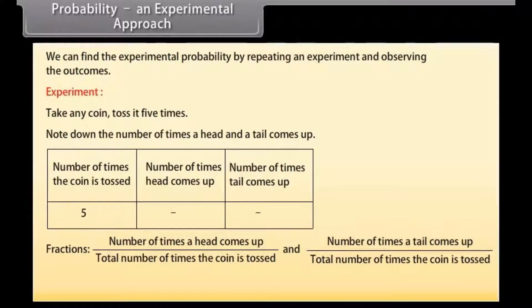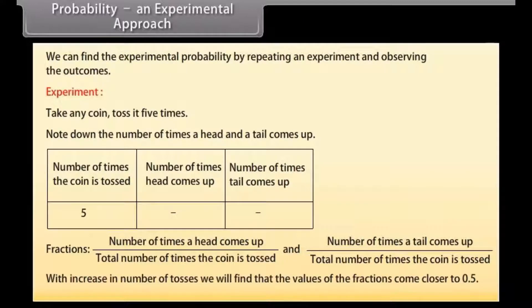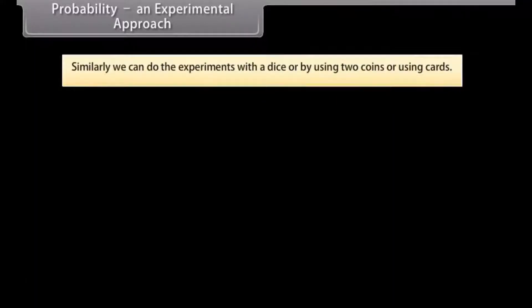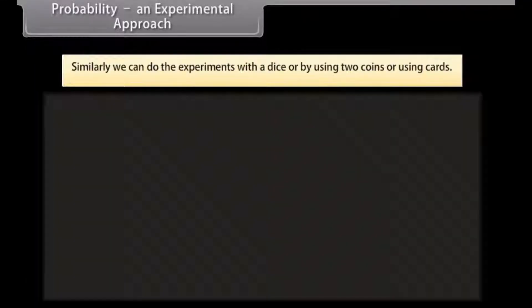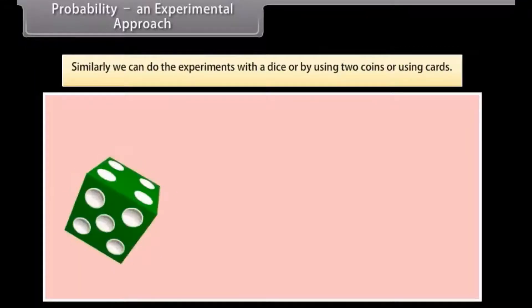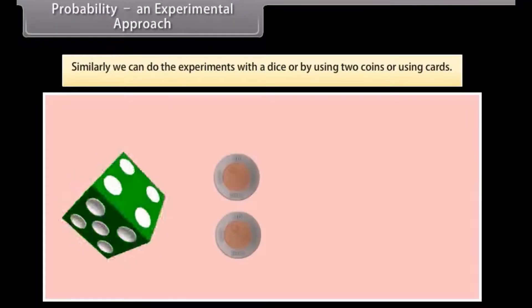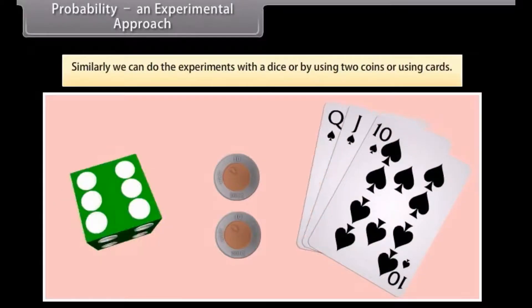The second fraction is the number of times a tail comes up upon total number of times the coin is tossed. As we increase the number of tosses, we will find that the values of the fractions come closer to 0.5. Similarly, we can do experiments with a dice, by using two coins, or using cards.